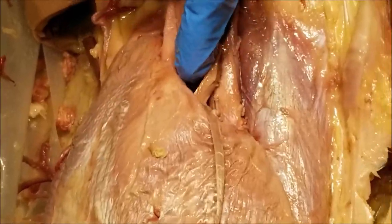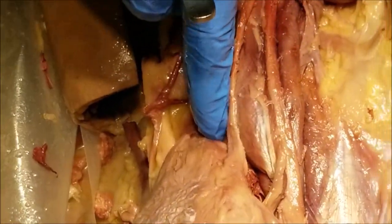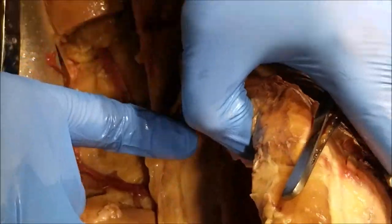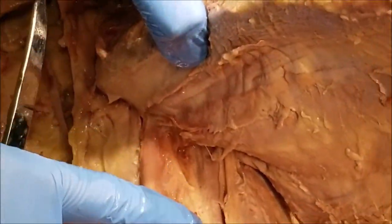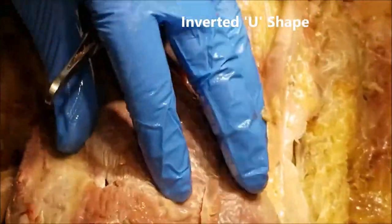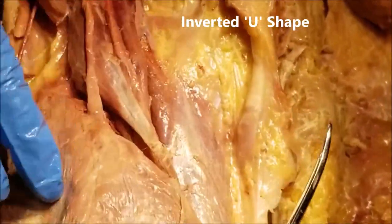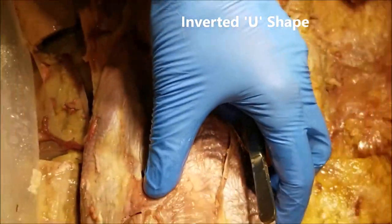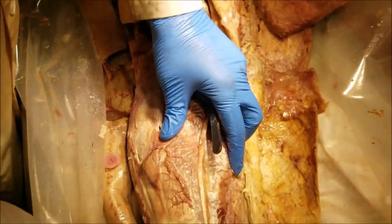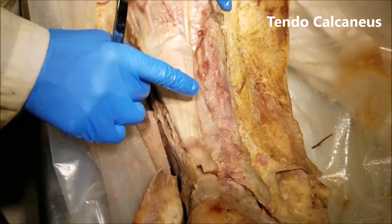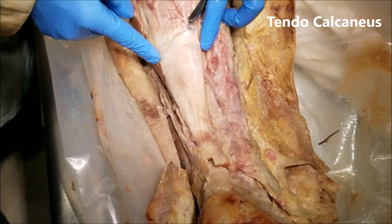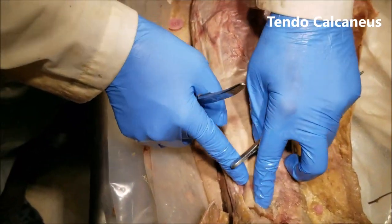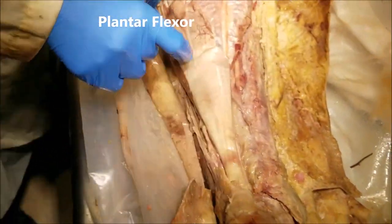The attachment continues onto the posterior aspect of the fibula, coming down as we can see here. So the origin of the soleus is an inverted U-shape. The insertion of the soleus is along with the gastrocnemius into the tendocalcaneus, which we can see very clearly here — from this point the tendon rapidly becomes the tendocalcaneus.